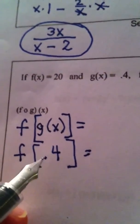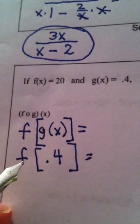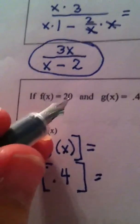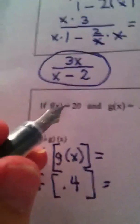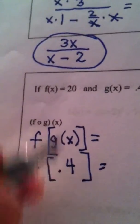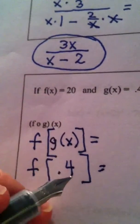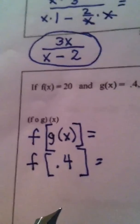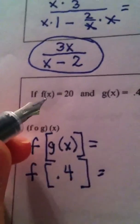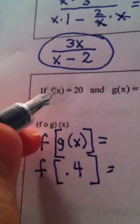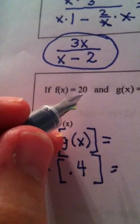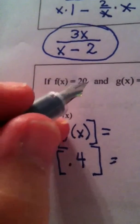Now, we're supposed to put 0.4 now into function f, but a lot of students get confused here because they're like, well, what do I do with the 20 and the 0.4? Okay, nothing. What is the answer to function f? f of x is 20. 20 is constant.